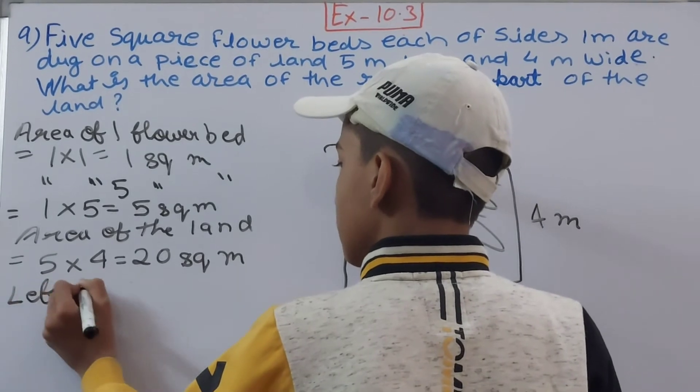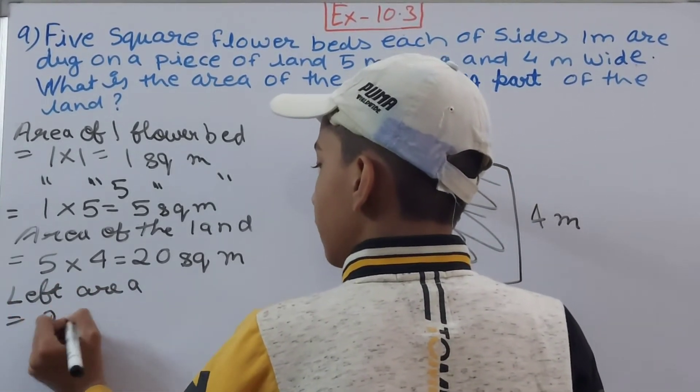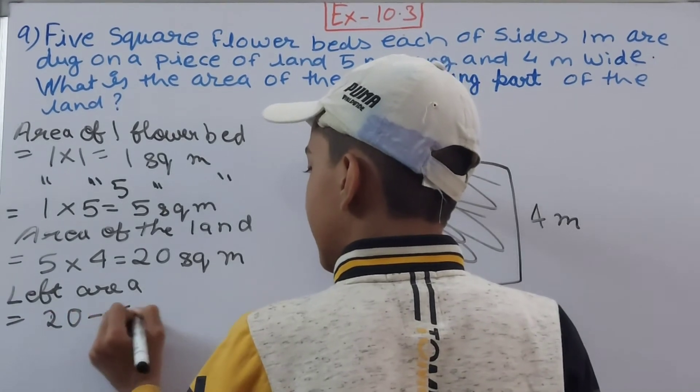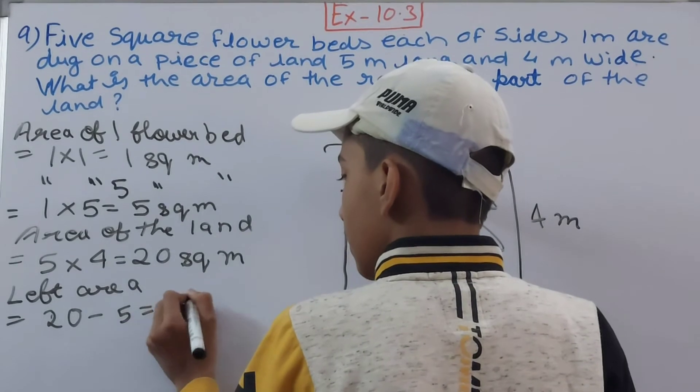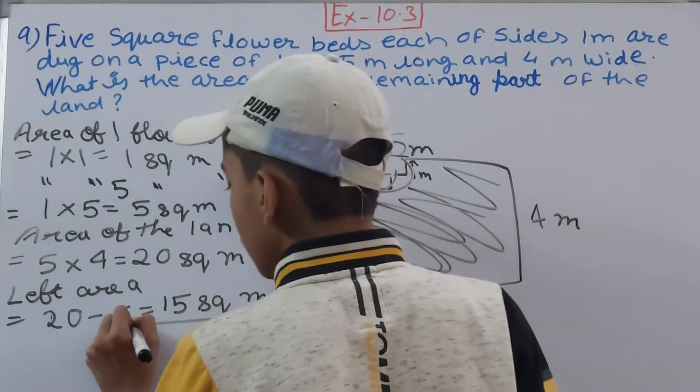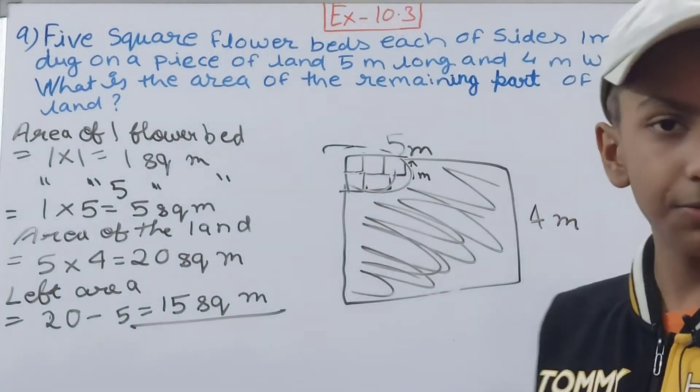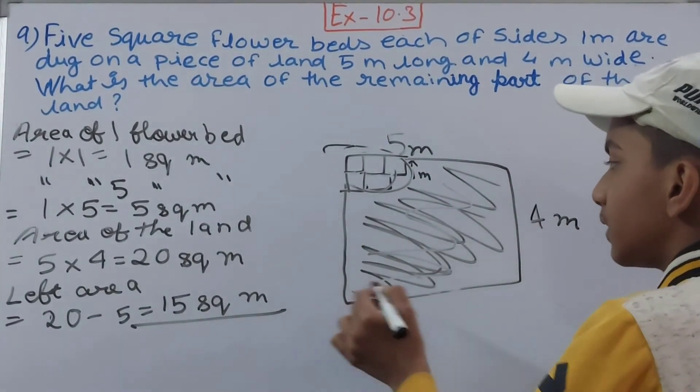Left area: Simply subtract 5 from 20, and that is 15 square meters. So leftover area is 15 square meters. This much of area, so answer becomes 15 square meters.